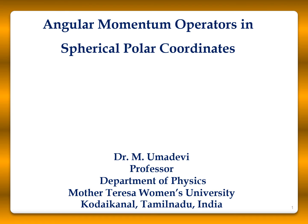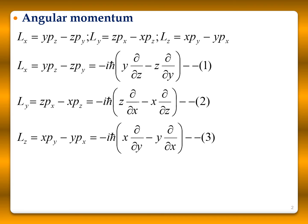We will see how to represent angular momentum operators in terms of spherical polar coordinates. The angular momentum can be represented as R cross P, and the components are: Lx = YPz − ZPy, Ly = ZPx − XPz, and Lz = XPy − YPx. The momentum operators Px, Py, Pz can be represented as −iℏ ∂/∂x, −iℏ ∂/∂y, and −iℏ ∂/∂z respectively.